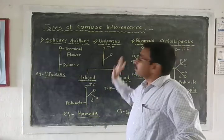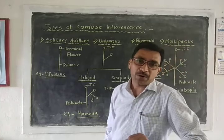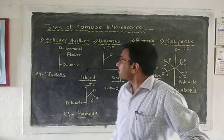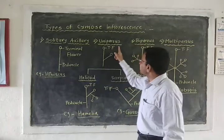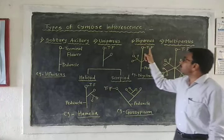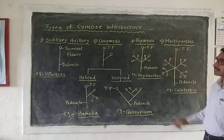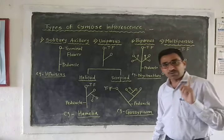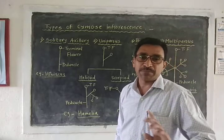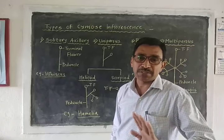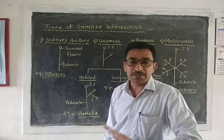There are four types of cymose inflorescence. The first one is solitary axillary inflorescence, the second one is uniparous inflorescence, the third one is biparous inflorescence, and the last one is multiparous inflorescence.